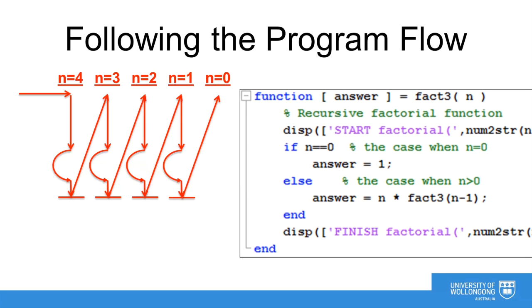So now we start our base case. Notice that this time, after displaying the start message, we check for n equals 0. And lo and behold, this is the first time that it is actually true. Therefore we allocate the answer of 1, skip the else part of the function and display the finish line. This ends the n equals 0 call to our function.